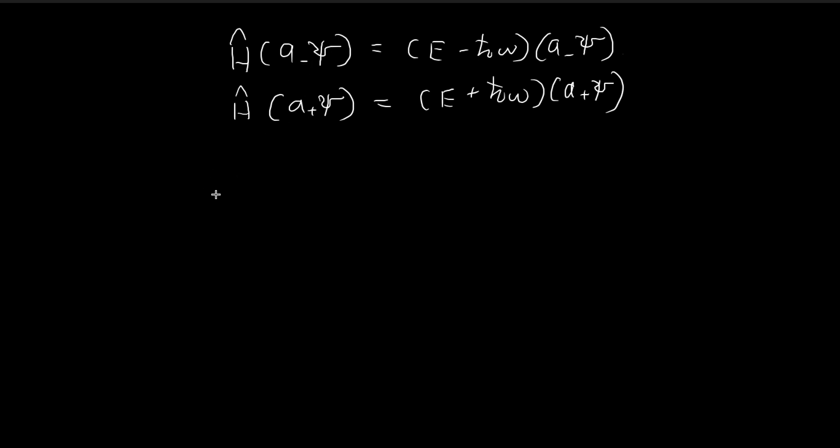This immediately leads to a problem. Let's say I have a function ξ that satisfies the Schrödinger equation with energy level E. This implies that A⁻ξ also satisfies the Schrödinger equation with energy E - ℏω. Since this is also a solution, it implies that A⁻A⁻ξ is also a solution with energy E - 2ℏω and so on. This can go on forever.